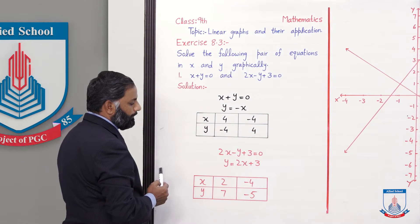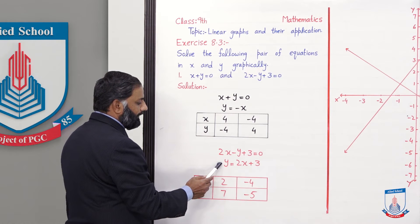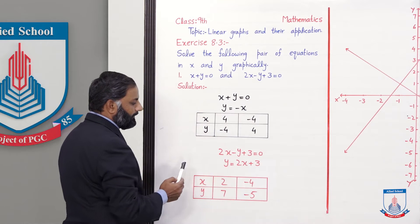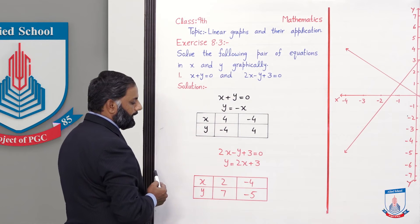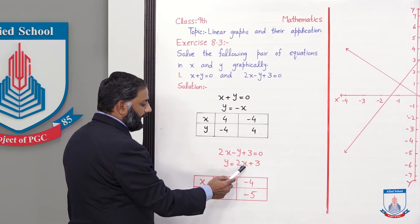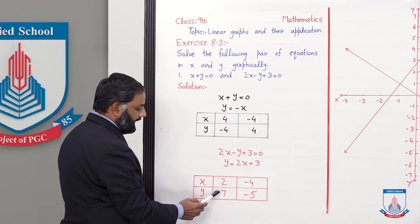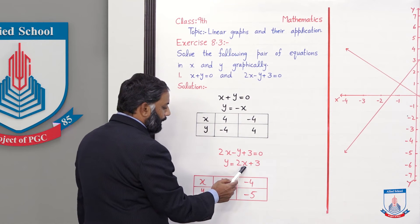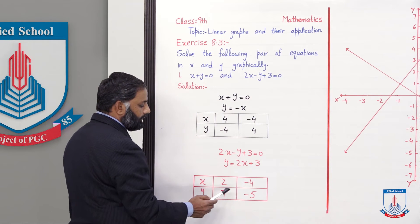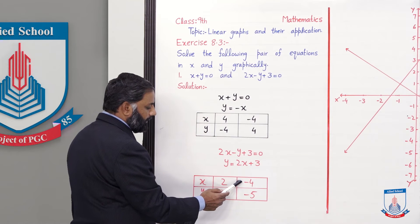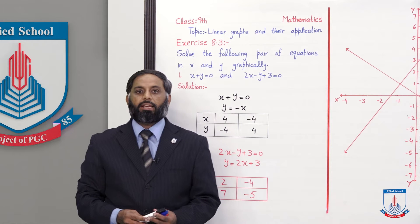Second equation हमें given है: 2x - y + 3 = 0। -y को right side पे ले जाएं तो y = 2x + 3 equation आएगी। अब x की value 2 इसमें put करें तो 2×2 = 4 + 3, y की value 7 आएगी, तो first ordered pair आया (2, 7)। Then x की value -4 put करें तो 2×(-4) = -8 + 3, y की value -5 आई, तो second ordered pair (-4, -5) आया।